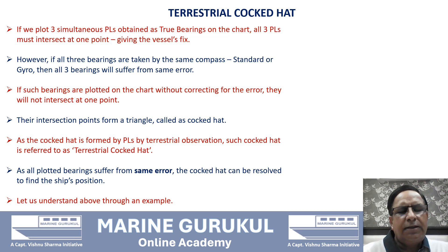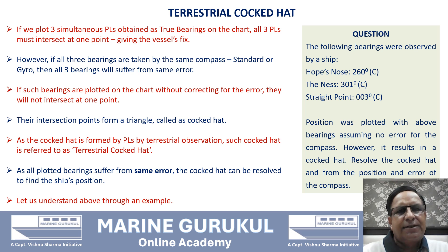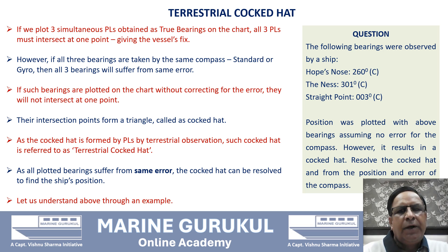Let us understand this with an example. The following bearings were observed by a ship: Hope's Nose 260° compass, The Ness 301° compass, Straight Point 003° compass. The position was plotted with the above compass bearings assuming no error of the compass — that is, compass error was assumed nil. However, it results in a cocked hat. Resolve the cocked hat and find the position.